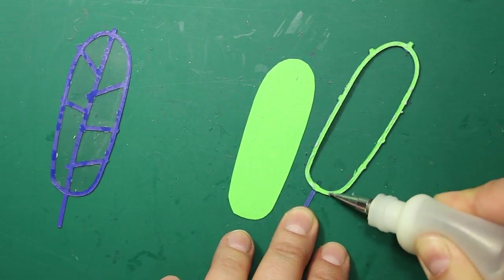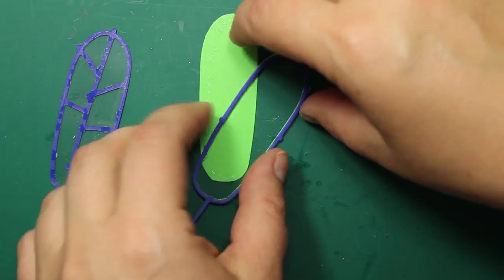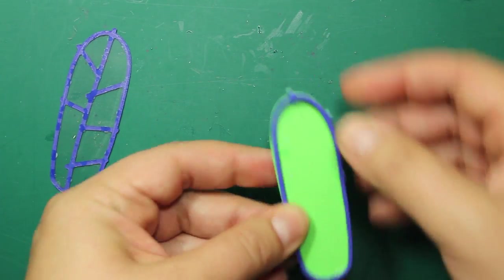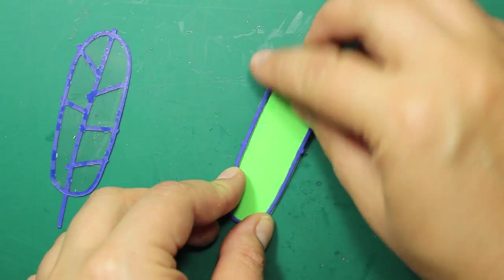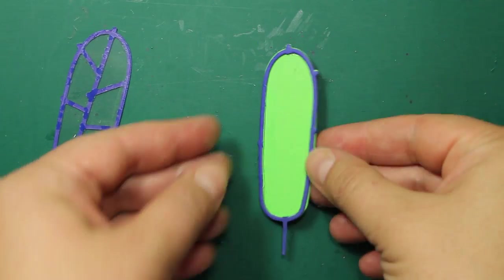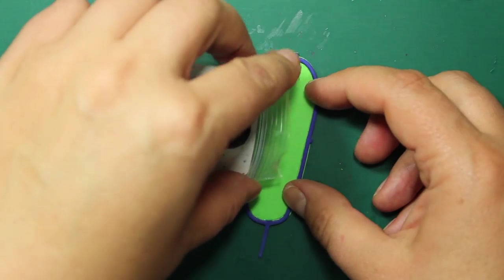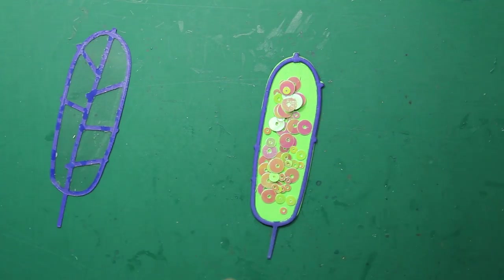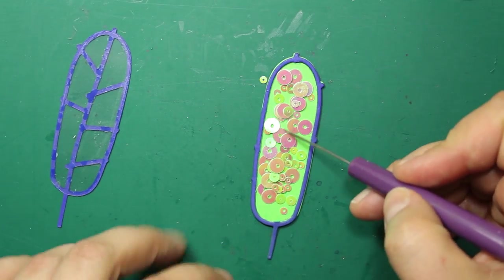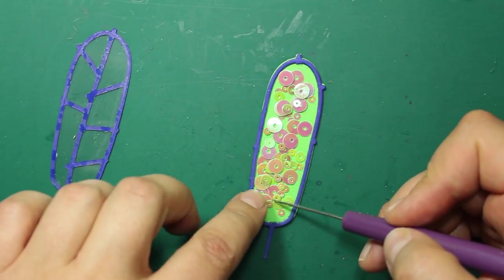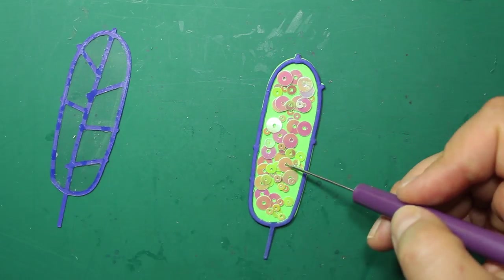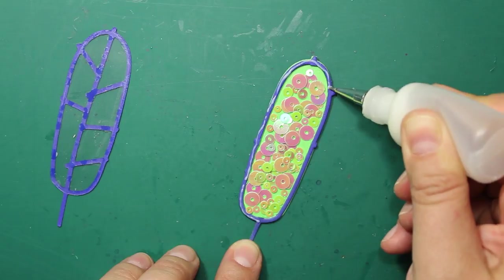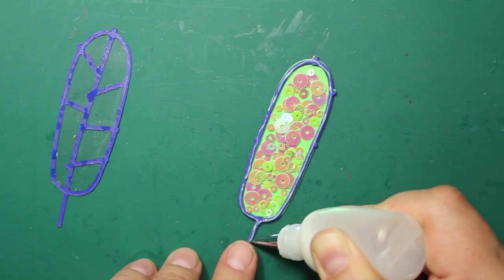Now I am attaching this dimensional outline to the background. Now I can fill in this shape with sequins. Now we can apply liquid adhesive all around the border and stick the top part on top.